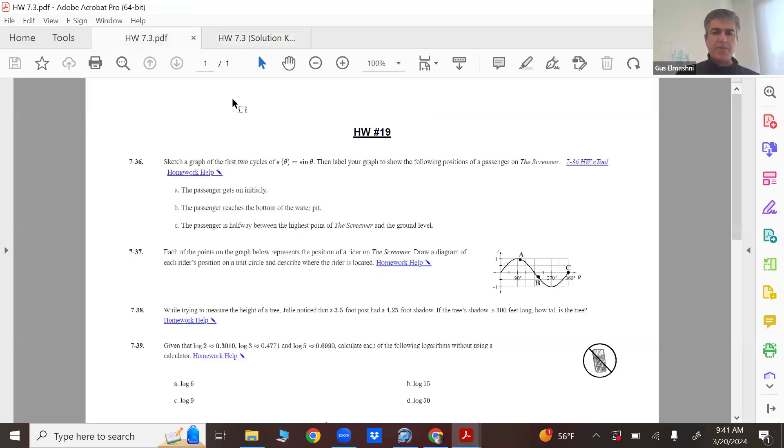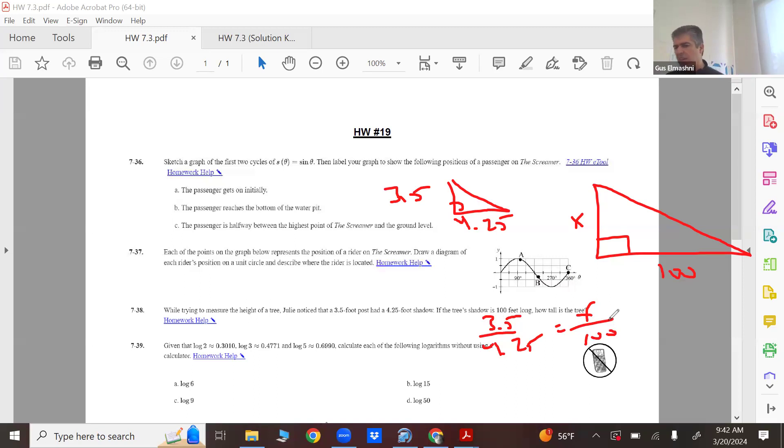And for 738, the best way to do that one is to make two triangles. And if you have a post that's 3.5 and a shadow is 4.25, then at the same time, because the sun is shining a certain way, if a shadow of the tree is 100, solve for the tree height. So 3.5 over 4.25 equals x over 100. Cross multiply, you should get 82 point something.